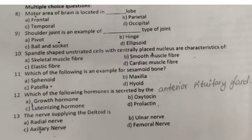Question 9: The shoulder joint is an example of which type of joint? Options: A. pivot joint, B. hinge joint, C. ball and socket joint, D. ellipsoid joint. The answer is ball and socket joint.